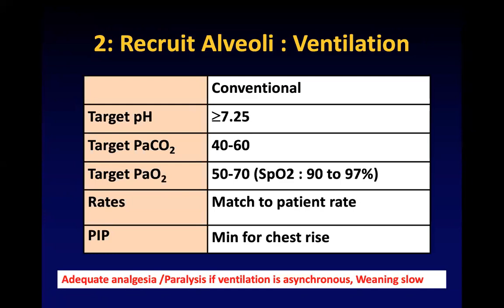The second step is to recruit the alveoli. In moderate to severe PPHN you may have to ventilate to open up collapsed alveoli. Conventionally target a pH of 7.25, PCO2 between 40 to 60, and PO2 between 50 to 80 — keeping saturation between 90 to 95 percent. Match the patient rate if it is less than 50 to 60. Use the minimum PIP to cause chest rise; if chest rise is not visible, auscultate for air entry.